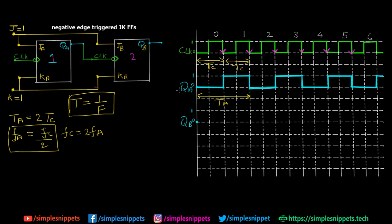Now let's track QB, the output of the second flip-flop. This flip-flop is also negative edge triggered, but its clock is QA. So QB gets activated only on the negative edges of QA. Starting QB at 0, it stays 0 until the first negative edge of QA, toggles to 1, stays 1 until the second negative edge of QA, then toggles back to 0, and so on.